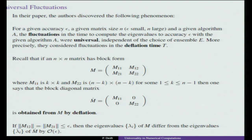The way algorithms work is that you run until you find some k-by-k block form where the off-diagonal entries are less than ε, then you throw away the off-diagonal entries, consider the two submatrices M_11 and M_22, and start the algorithm again. You keep working with smaller and smaller matrices — that is the algorithm with deflation.